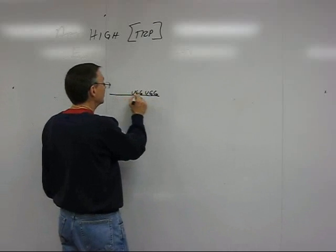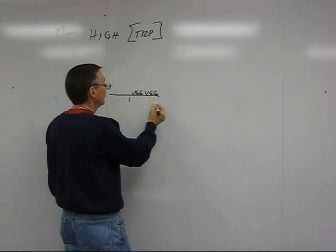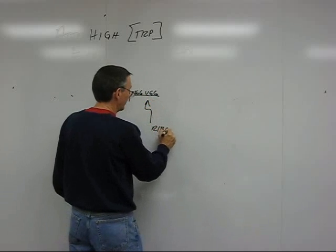So as the ribosome goes through region 1 here, there's no problem, the ribosome moves through here quickly.